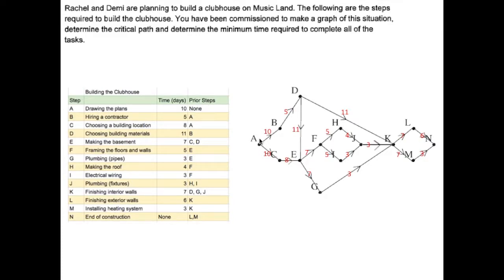Now let's think about our critical paths. The first nexus point is E. I can take A to B to D to E or A to C to E. A to C to E is only 18. A to B to D to E is 10+5+11=26. I'm definitely going to go this way. To get to K, I could come via E to G — that's 7+3=10 — or via E to F to H to J, which is 7+5+4+3=19. So I'm going to go via E to F to H to J. And then for J to K versus the G to K branch: 7+5=12 is longer than 7+3=10, so I take the 12 route.